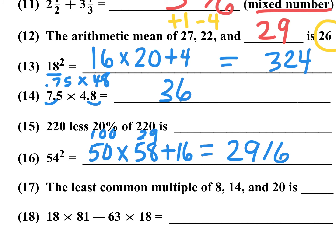Number 15: 220 less 20 percent of 220. That's just 80 percent of 220. Multiply 0.8 times 220, which equals 8 times 22. Factor 22 as 2 times 11: 8 times 2 is 16, and 16 times 11 is 176. So the answer is 176. A quick trick: to multiply by 22, multiply by 2 then by 11.